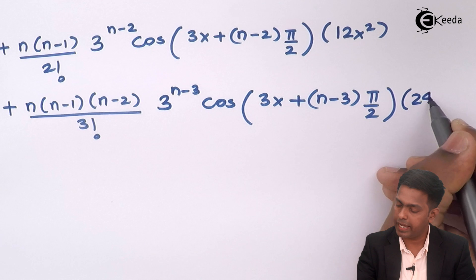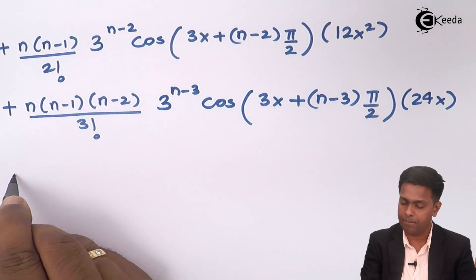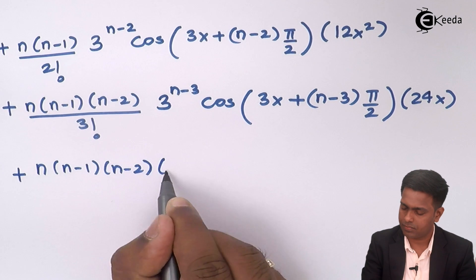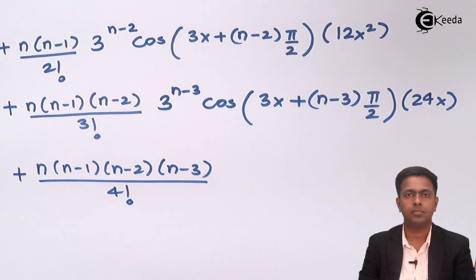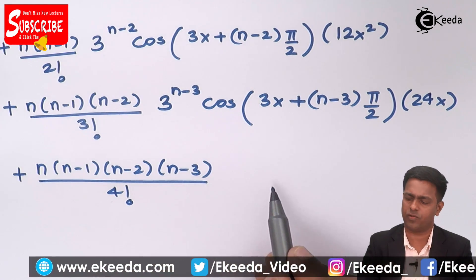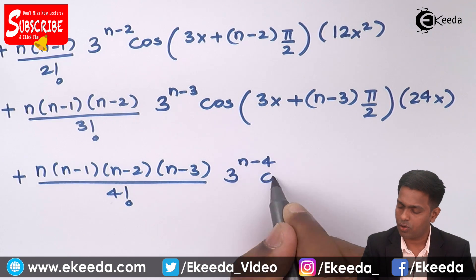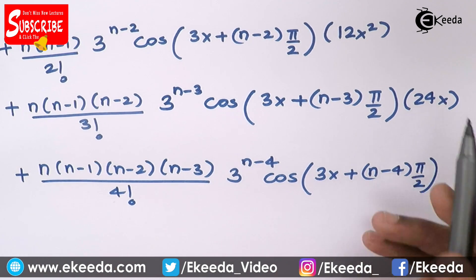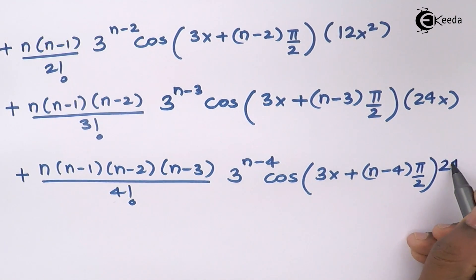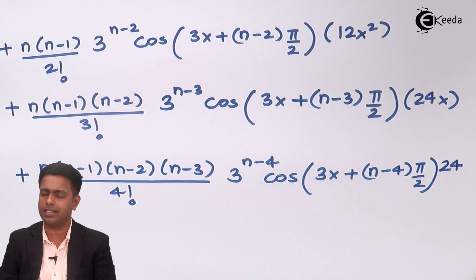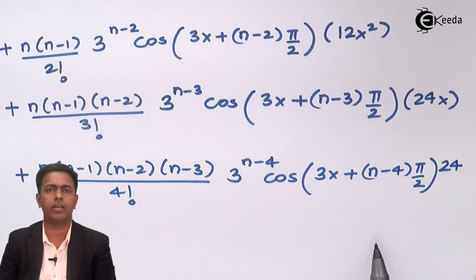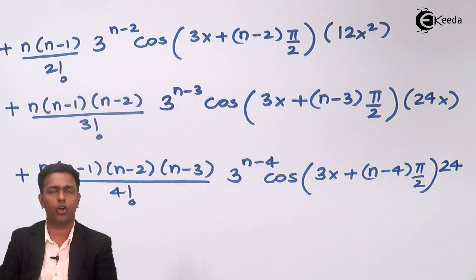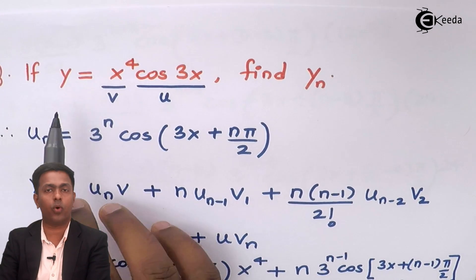The next term involves nC4 times u(n−4). That gives 3 to the power (n−4) times cos(3x + (n−4)π/2), multiplied by v4, which is the derivative of 24x, giving 24. After this we stop, because the next term would require v5, the derivative of 24, which is 0 — so all subsequent terms vanish.